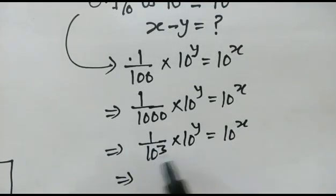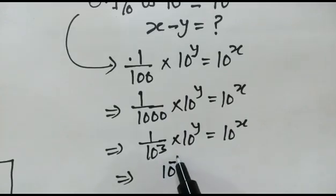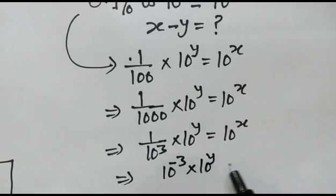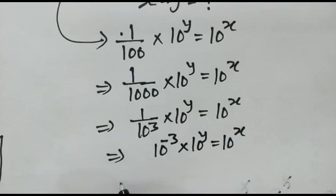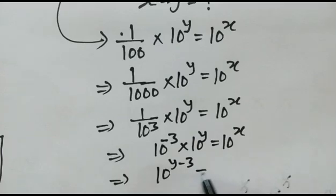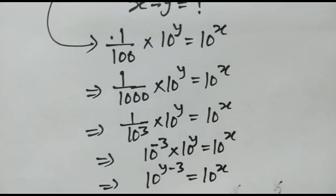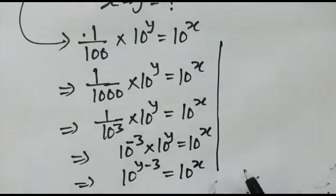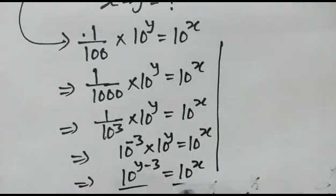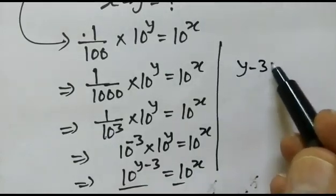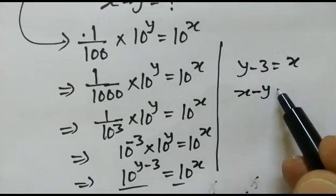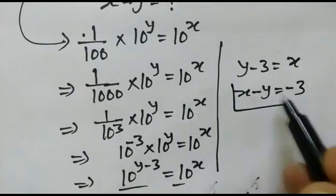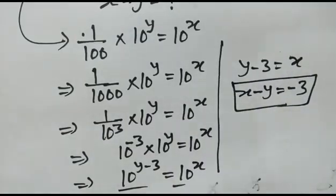Now 10 to the power 3 can be written as 10 to the power minus 3, into 10 to the power y is equal to 10 to the power x. So we have 10 to the power y minus 3 is equal to 10 to the power x. Since the bases are the same, y minus 3 equals x, or x minus y equals minus 3. Thank you friends.